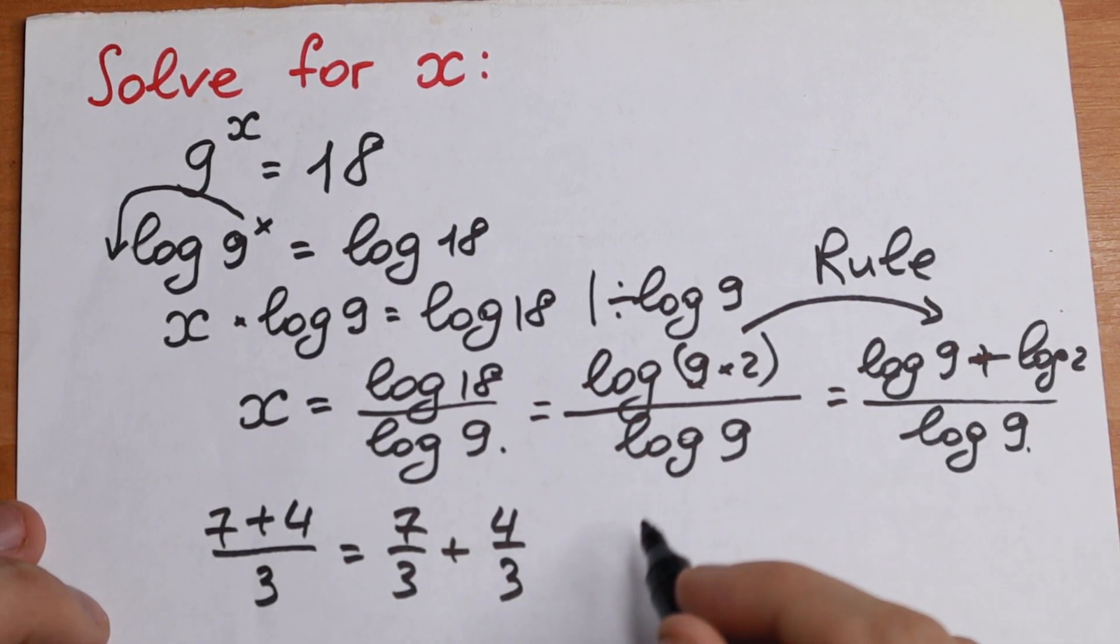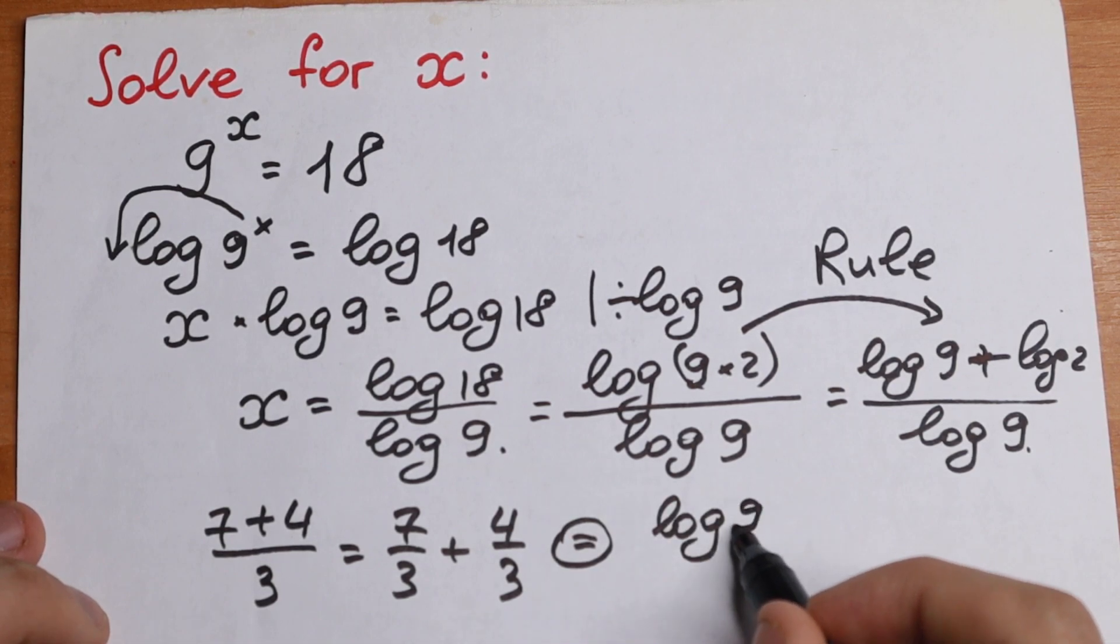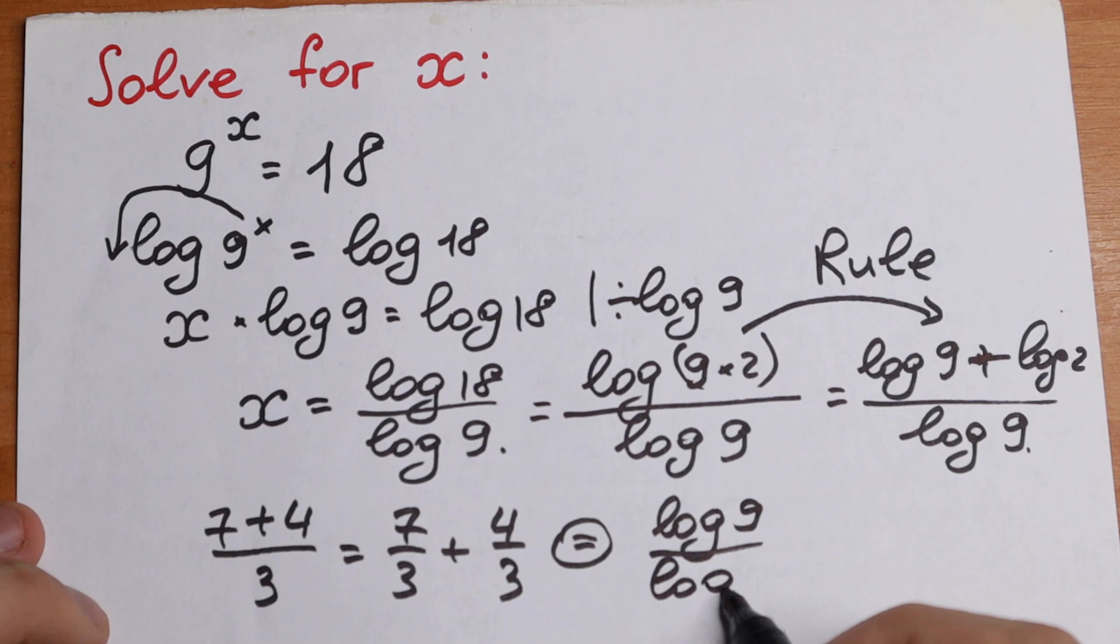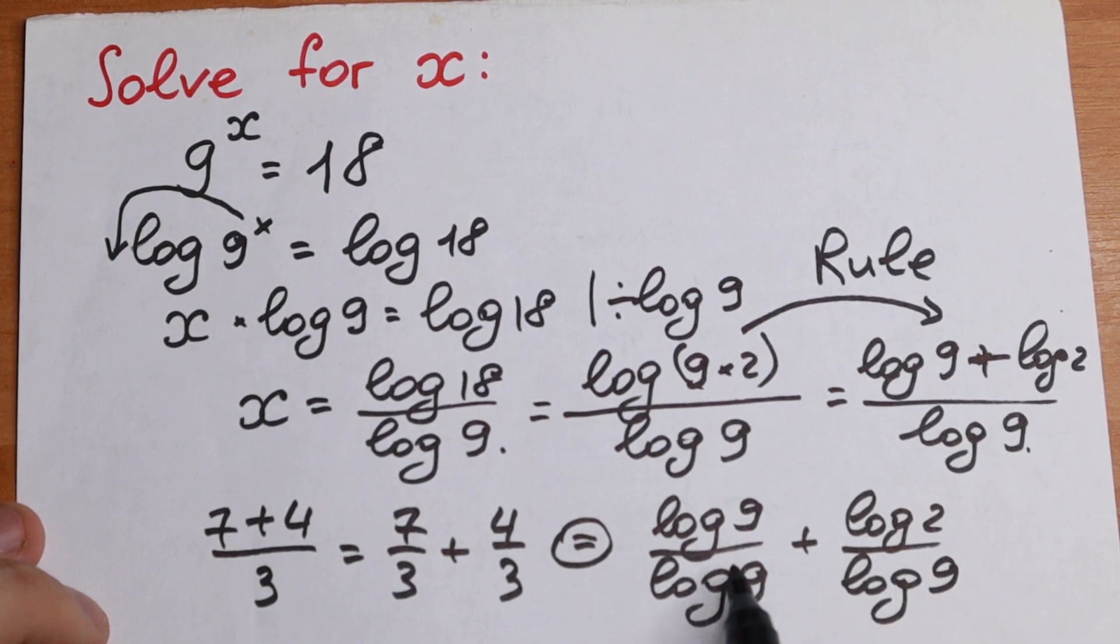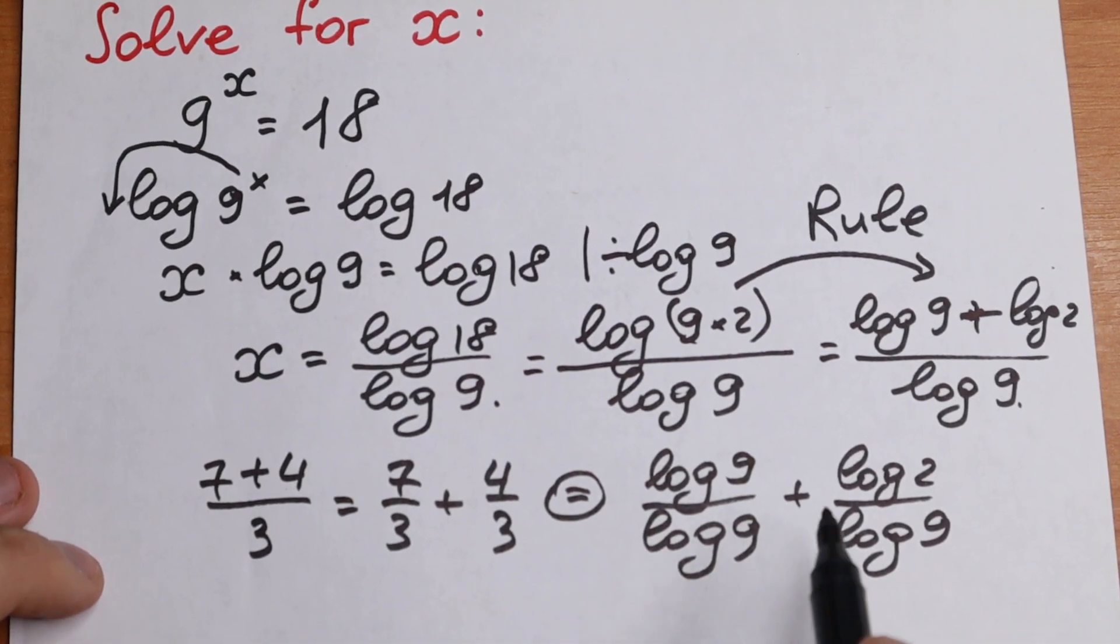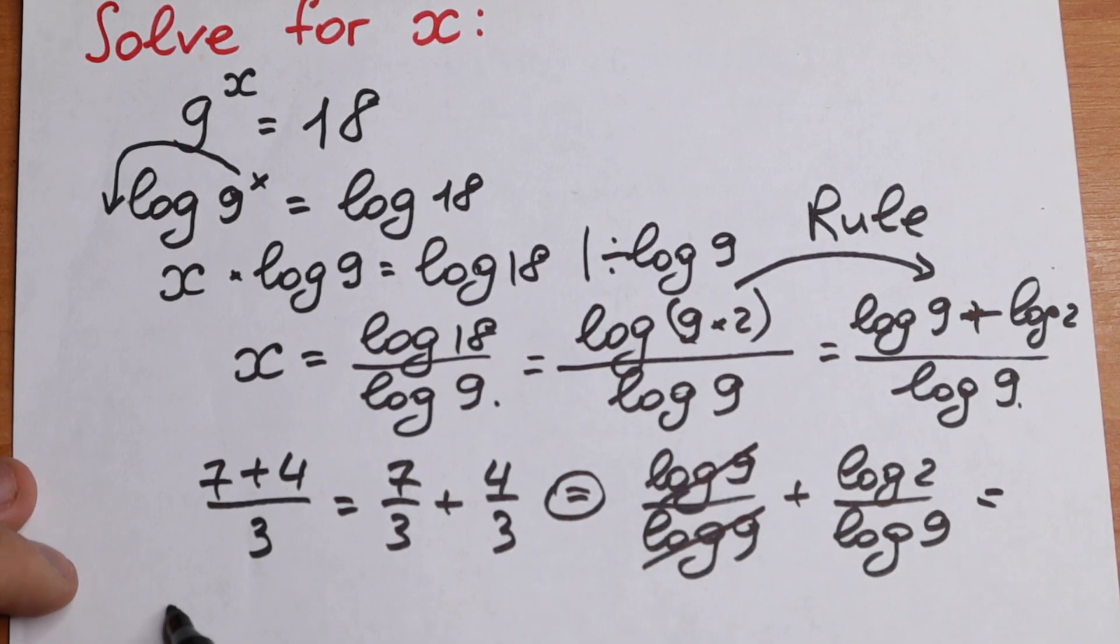So dividing by parts, we will have log 9 dividing by log 9, and plus log 2 dividing by log 9. And as you can see, this is the same. So we can cancel this. As a result, we'll have right here one. So we can easily find